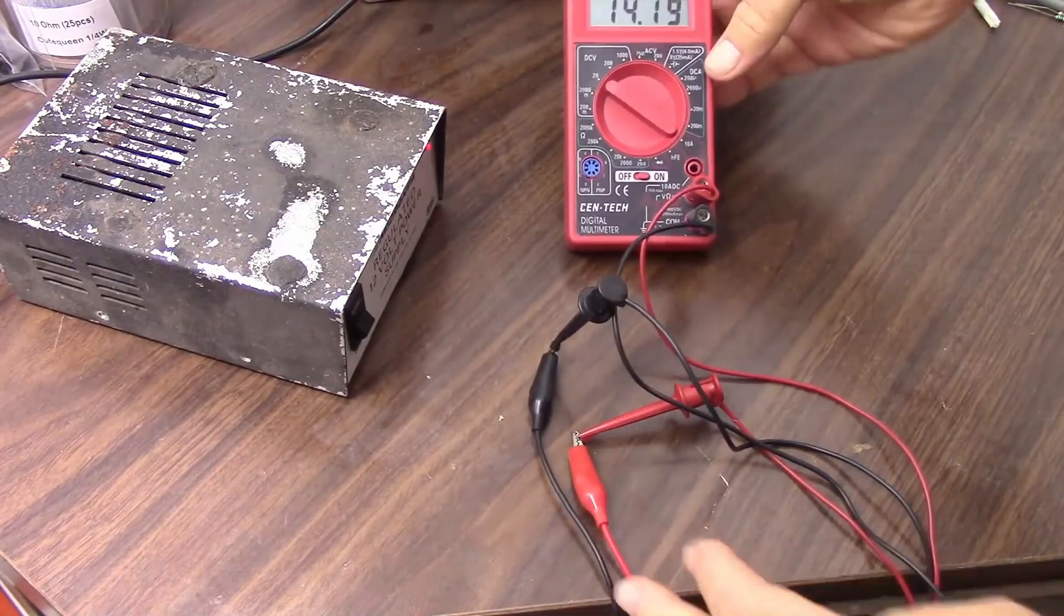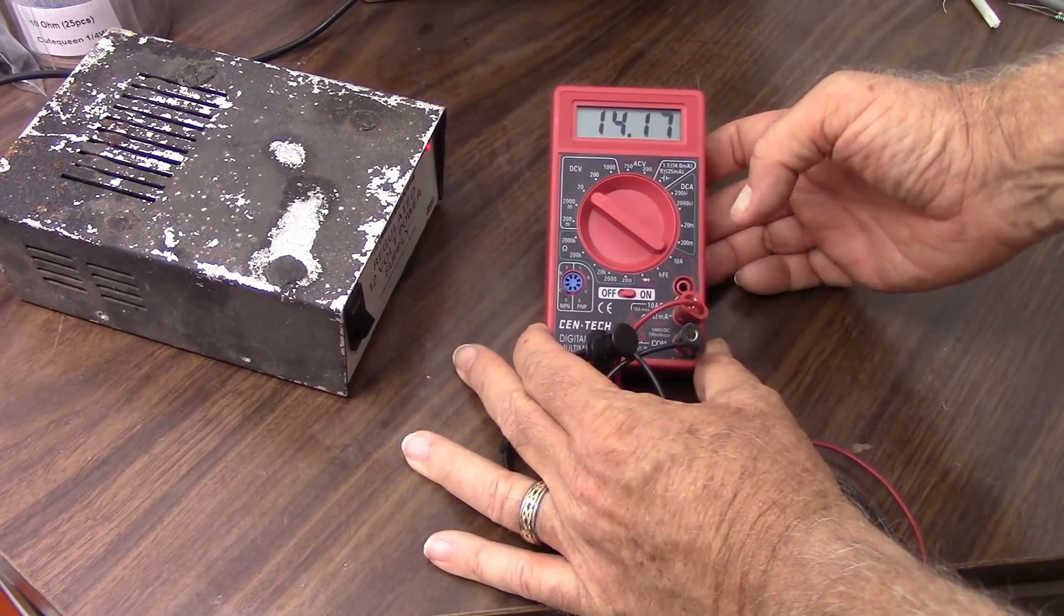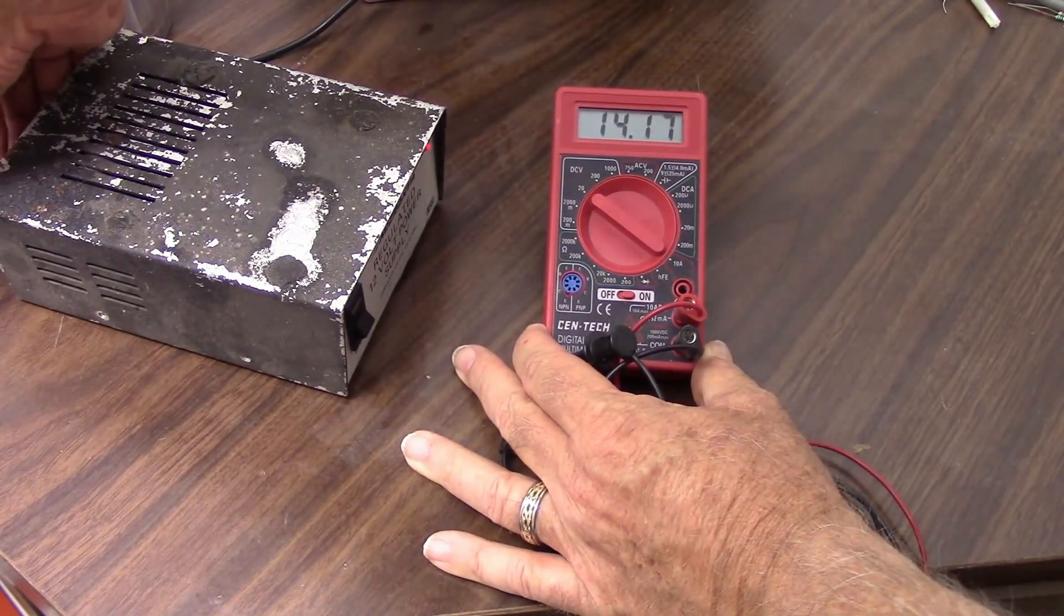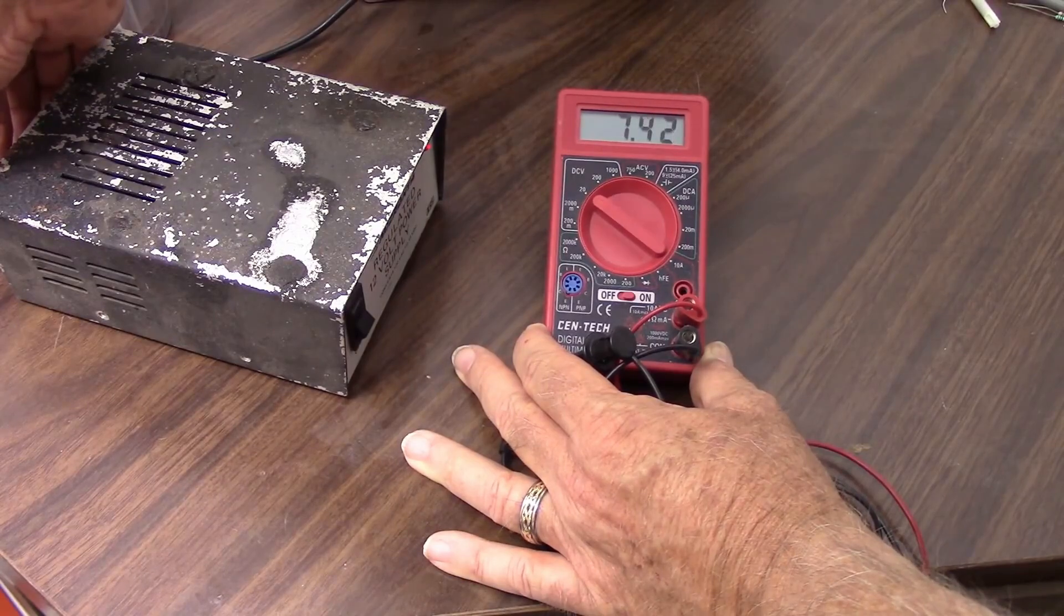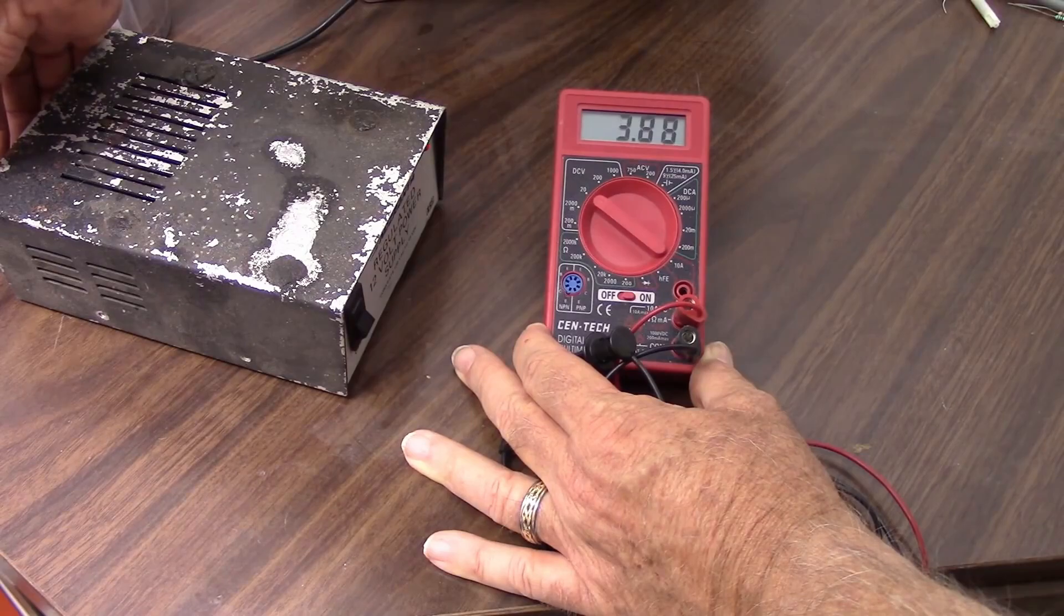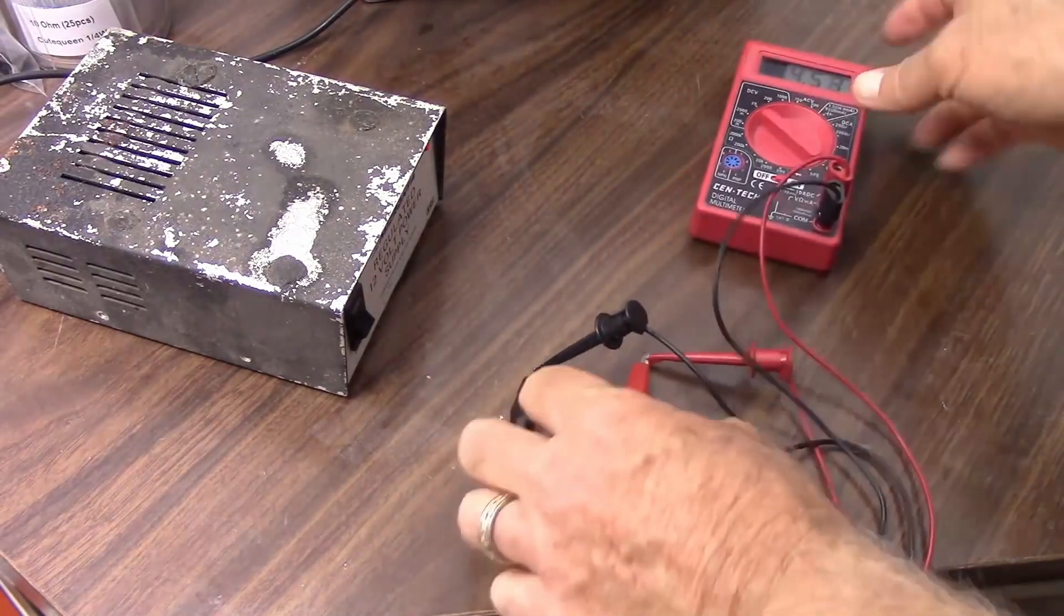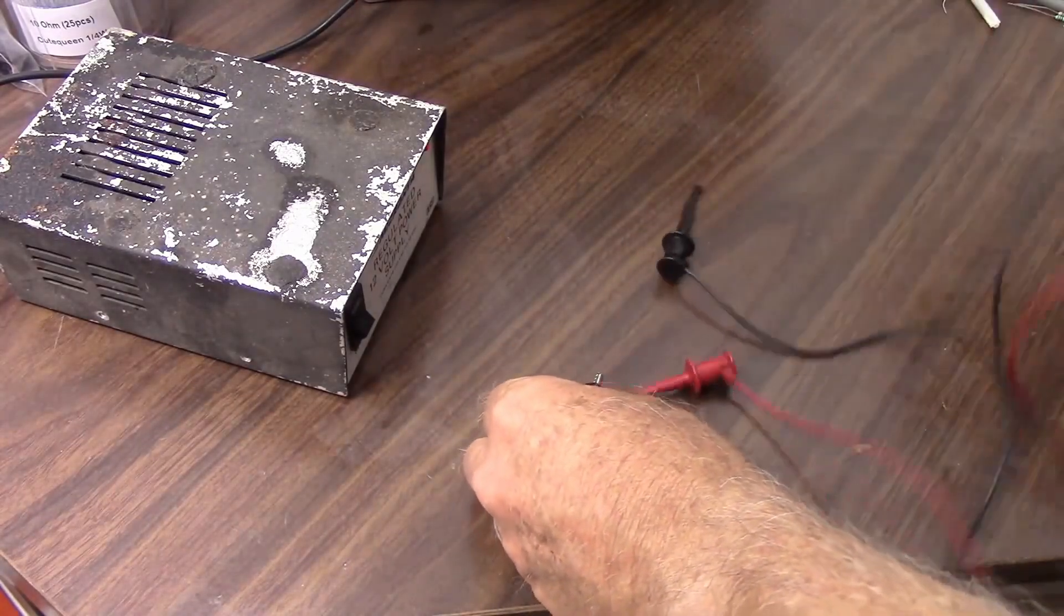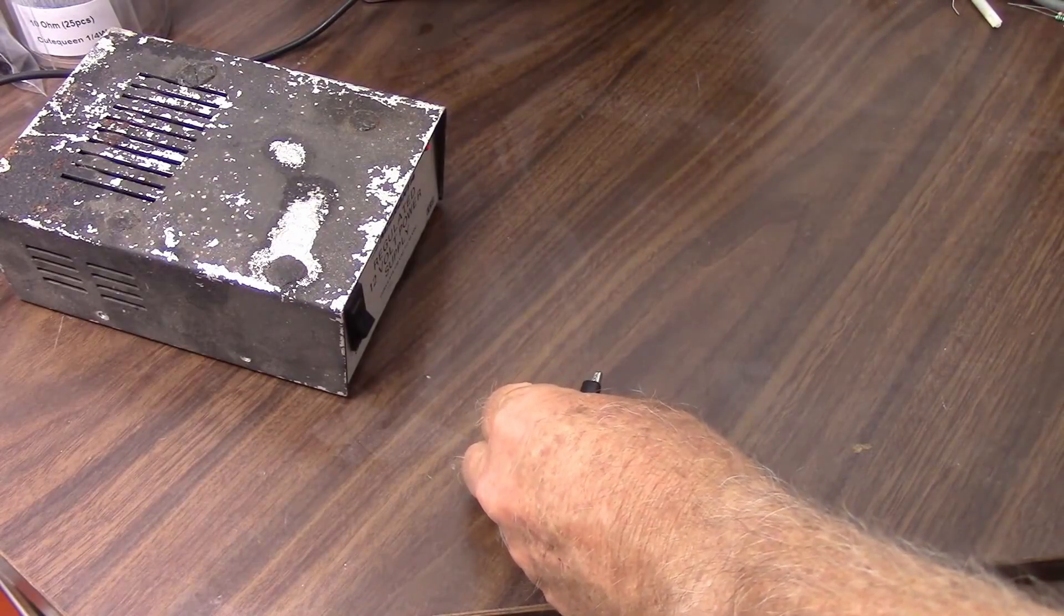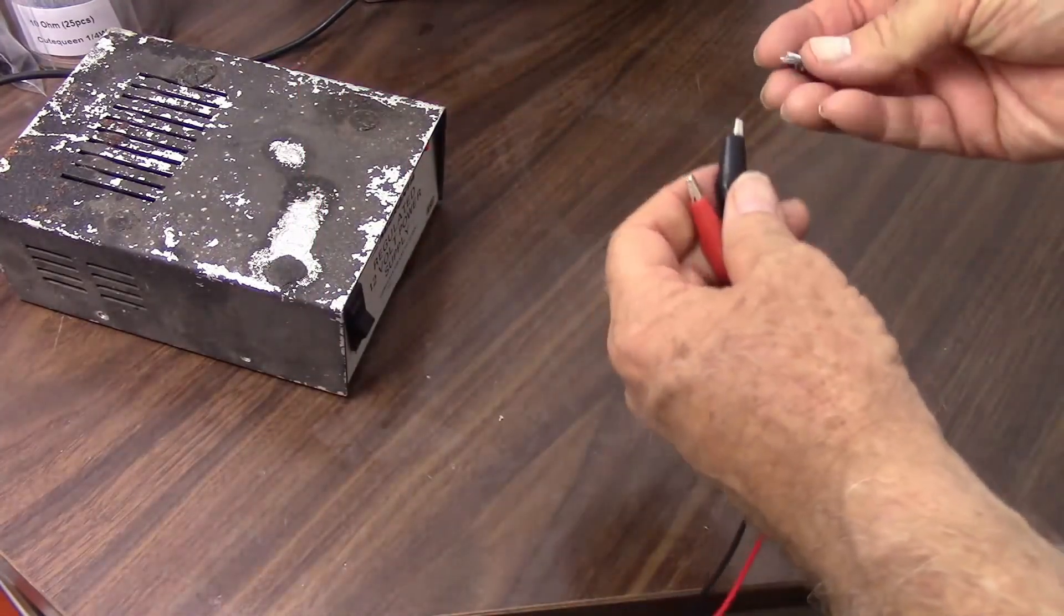So, yeah, it says 12 volts, 14-some-odd volts there. Let's crank that down to 4.5 volts, which is what the laser pointer should want. I think that's close enough. Let's get the meter out of here. Okay. Now, let's hook up the laser.